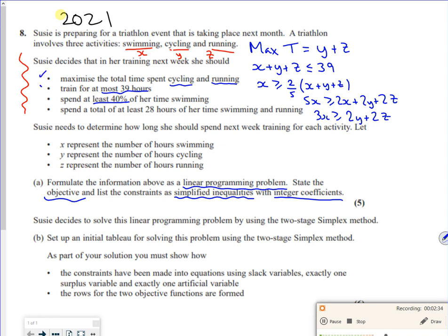So I've done that one. Spend a total of at least 28 hours swimming and running. So swimming and running, which is X plus Z, has to be at least 28. So that's not too bad.